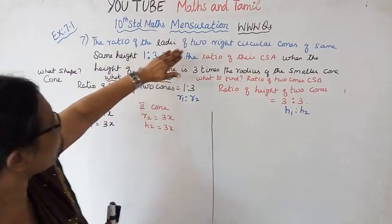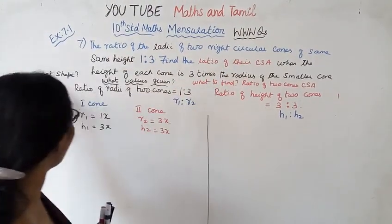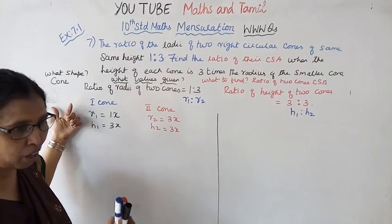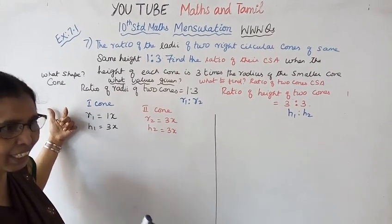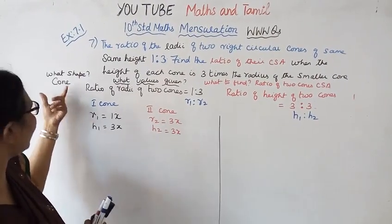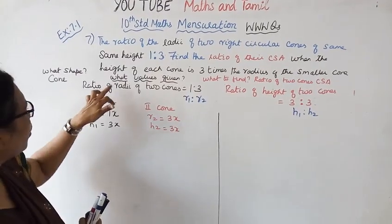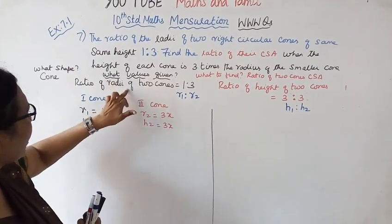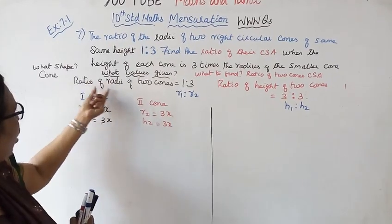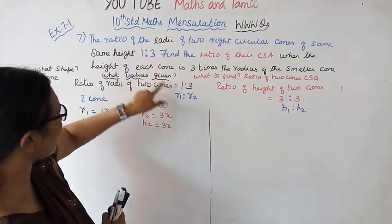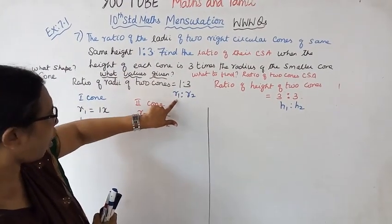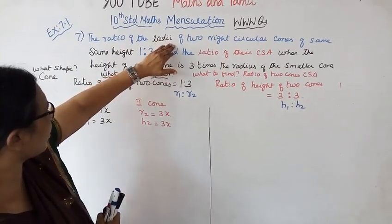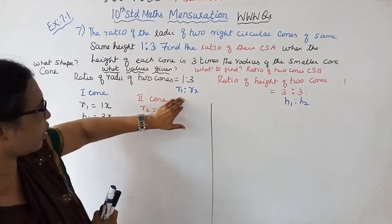The shape is the right circular cone. What values are given? The ratio of the radius of 2 cones. The ratio of the radius, R1 is to R2, is given as 1 is to 3.